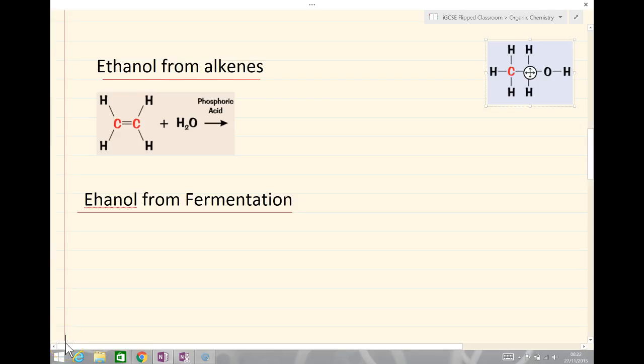We're now going to look at two different ways of making ethanol. The first way is making ethanol from alkenes and the second way is making ethanol from fermentation. Ethanol from alkenes: we have ethene, C2H4, plus water and we're using a phosphoric acid catalyst to make ethanol, C2H5OH, as the only product.